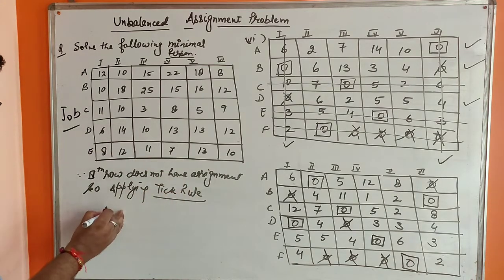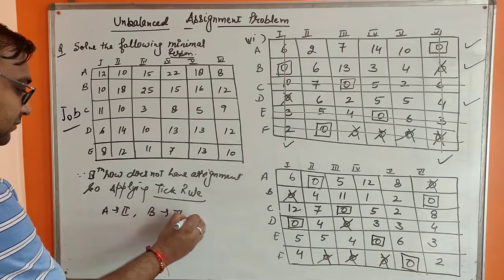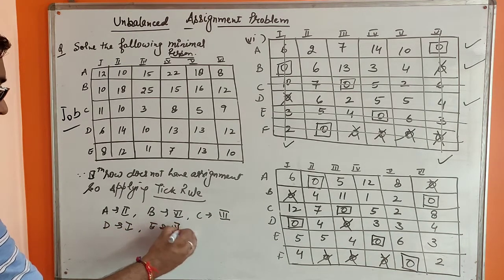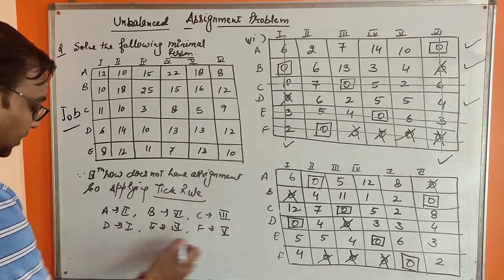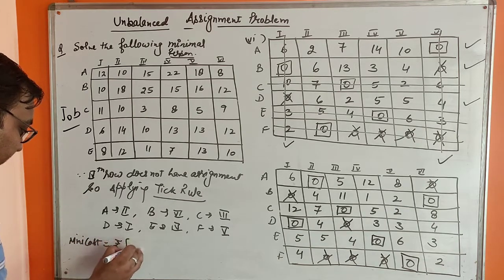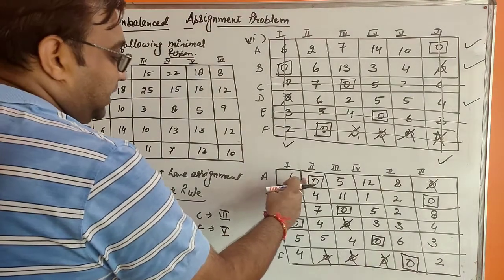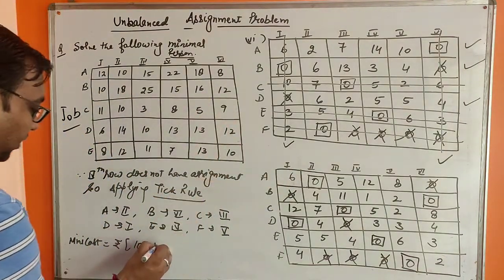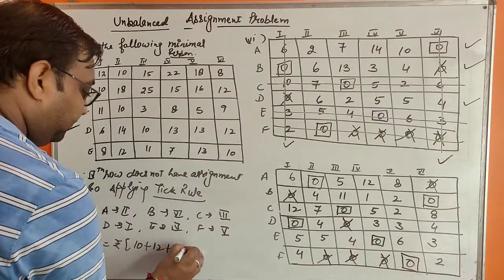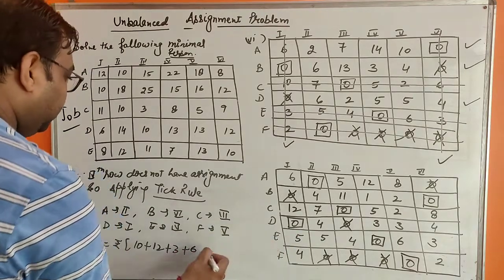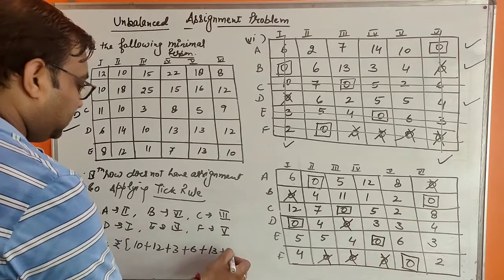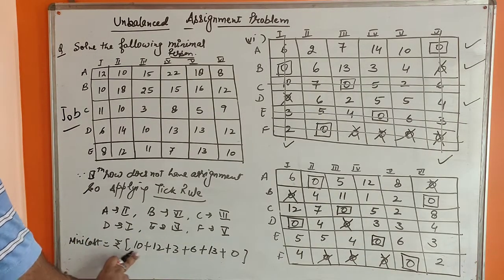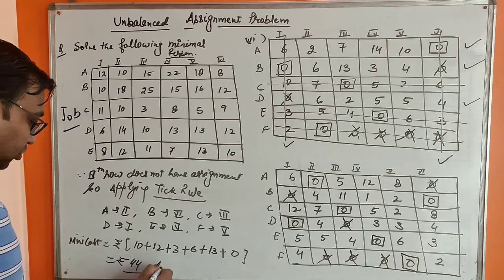The assigned values are: A assigned to 2nd person, B to 6th, C to 3rd, D to 1st, E to 4th, and F (dummy) to 5th. The minimum cost is calculated using original entries: 10 + 12 + 3 + 6 + 13 = 44. So the minimum total cost is 44. This is the required solution of this unbalanced assignment problem.